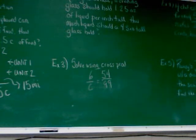As a general rule, a drinking glass should hold 1.25 ounces of liquid per inch tall. How much liquid should a 4 and a half inch tall glass hold?